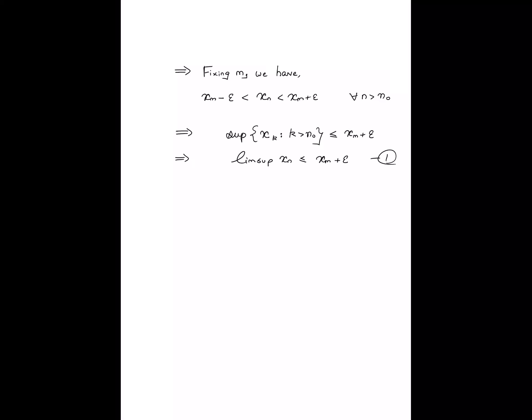Similarly, I can make a claim about the liminf. Since x_m − epsilon is less than the tail entries of the sequence, x_m − epsilon is less than or equal to the infimum of x_k for k greater than n_0. The fact that x_m − epsilon is a lower bound implies it is less than or equal to the greatest lower bound, meaning the liminf of x_n is greater than or equal to x_m − epsilon.